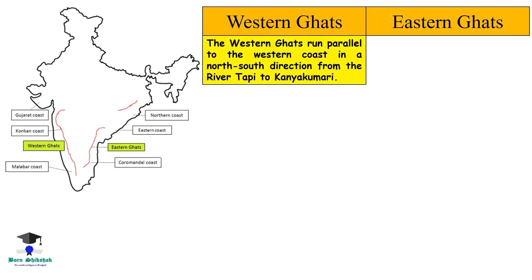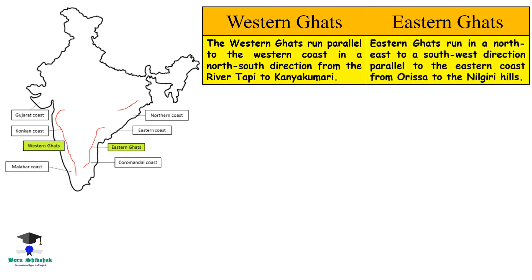The Western Ghats run parallel to the western coast in a north-south direction, from the river Tapti to Kanyakumari. The Eastern Ghats run in a north-east to south-west direction, parallel to the eastern coast, from Orissa to Nilgiri Hills.